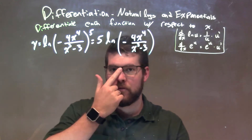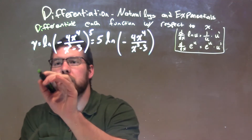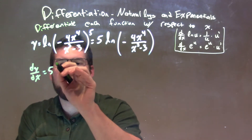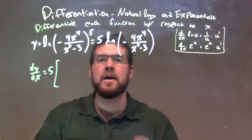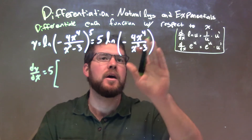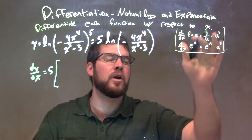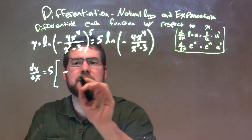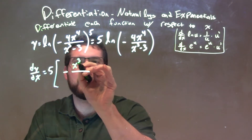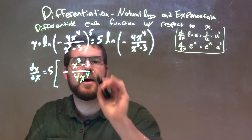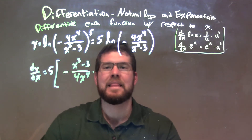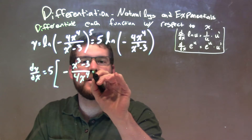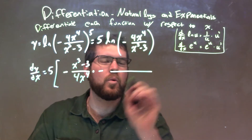From there, I'm going to take the derivative, and I find it a little easier this way. So dy/dx equals — that 5 is a constant that stays out front the whole time. Now we take the derivative of the natural log part. The derivative of natural log of u is 1 over u times u prime. So 1 over u means we're flipping that fraction. The negative stays out front, and flipping gives us x to the third minus 3 over 4x to the fourth, times the derivative of the inside.